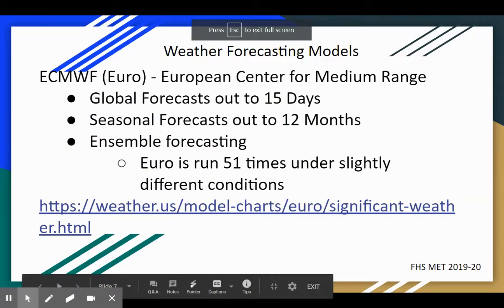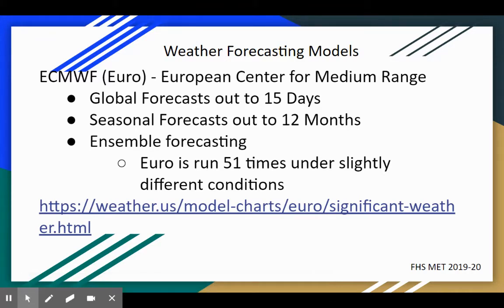The next model is the European model, referred to as the Euro. The Euro model can predict or forecast 15 days out, and is great for seasonal forecasts — such as the probability of a warmer-than-average summer — and can predict up to 12 months out. We'll also talk about ensemble forecasting: taking many different runs of one model while slightly changing some variables, then using the mean of those runs to give a probability of a weather event occurring. The Euro is particularly good for ensemble forecasting.